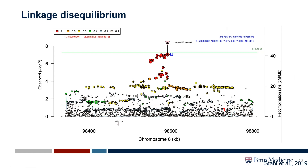Figuring out which is the causal variant is an excellent question and is the result of many years of work. There are multiple approaches — some bioinformatic using computational techniques, some using wet lab techniques. But for many of the GWAS variants identified, we actually still don't know what the causal variants are.